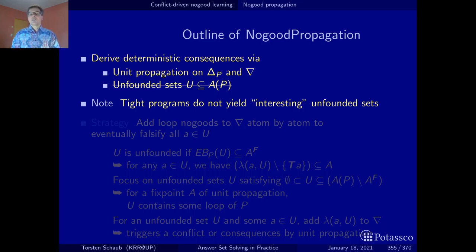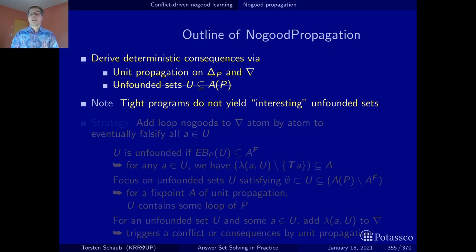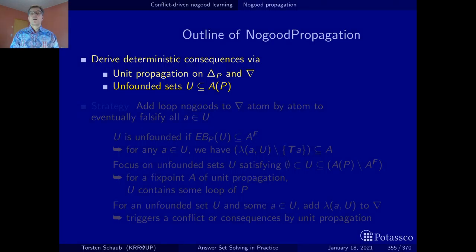Even though tight programs are actually more frequently the case — roughly two-thirds of the benchmarks are tight — we still have to invest some effort into unfounded set handling and come up with dedicated strategies. There are different strategies to compute unfounded sets and also different strategies to counterbalance the exponential number of loop no-goods that may result.